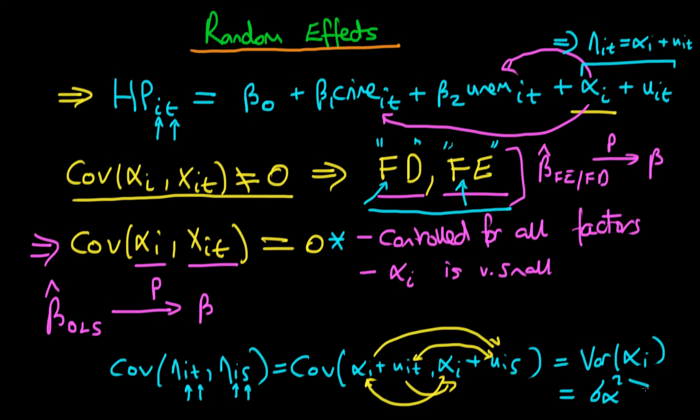And the variance is necessarily greater than zero. So in circumstances, even if we do have this particular assumption being true, whereby alpha i isn't correlated with the independent variables, if we estimate this above equation via pooled OLS, then our errors are going to be serially correlated with one another.